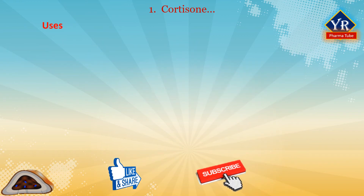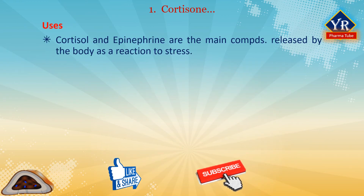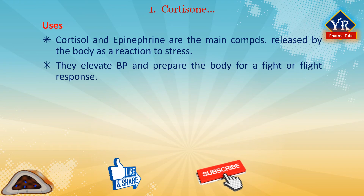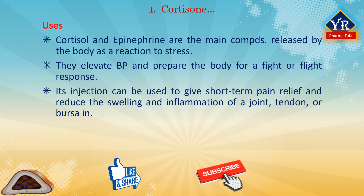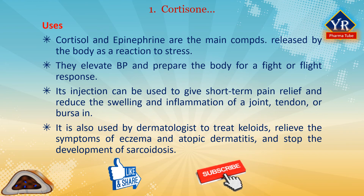The effects and uses of cortisone. Cortisone, a glucocorticoid, and epinephrine are the main compounds released by the body as a reaction to stress. They elevate blood pressure and prepare the body for a fight-or-flight response. A cortisone injection can be used to give short-term pain relief and reduce swelling from inflammation of a joint, tendon, or bursa — for example, in the knee, elbow, and shoulder joints, and into a broken coccyx. Cortisone is also used by dermatologists to treat keloids, relieve the symptoms of eczema and atopic dermatitis, and stop the development of sarcoidosis.